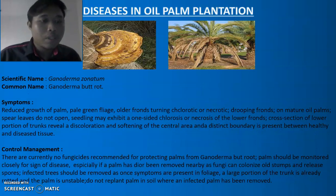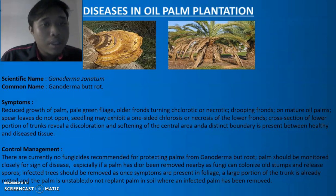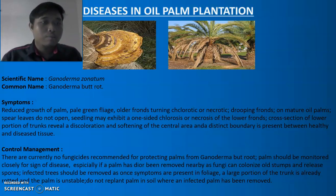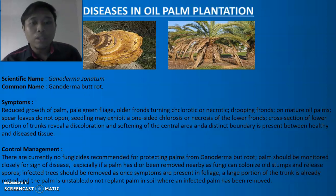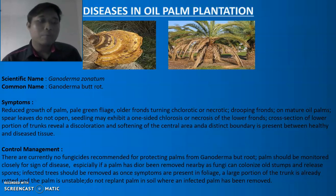Disease in oil palm plantation: the scientific name of the disease is Ganoderma zonatum, and the common name is Ganoderma basal stem rot. The symptoms include reduced growth of palm, pale green foliage, older fronds turning chlorotic or necrotic, and drooping fronds on mature oil palms.